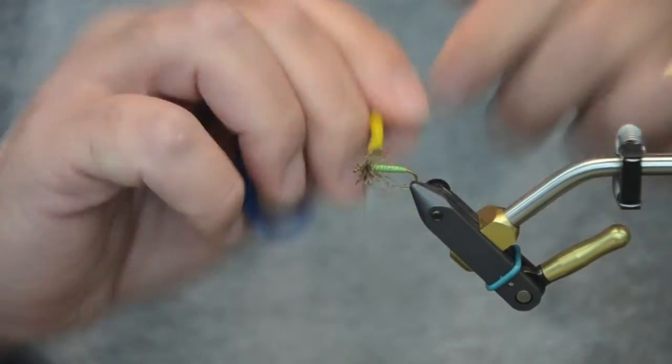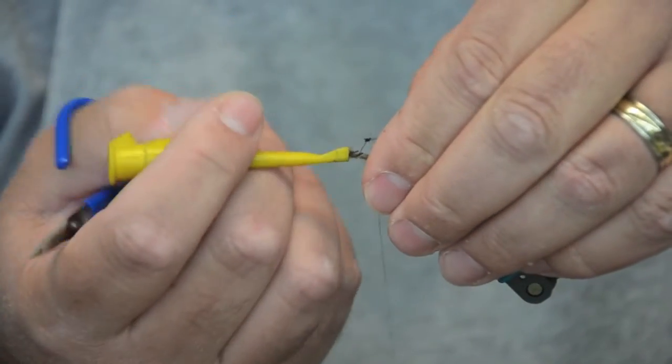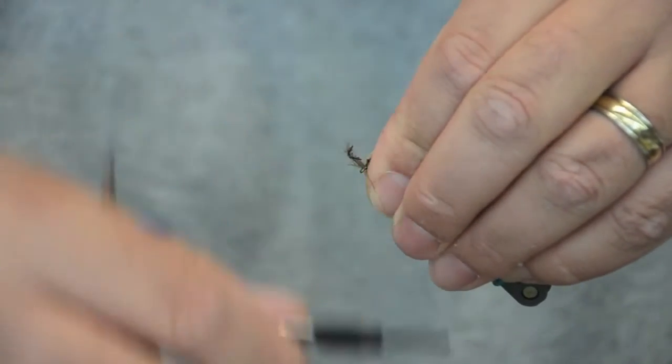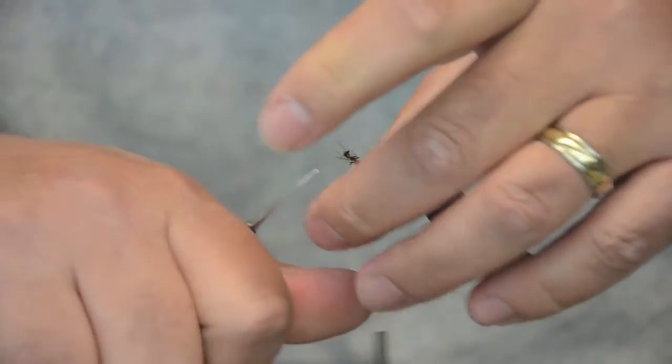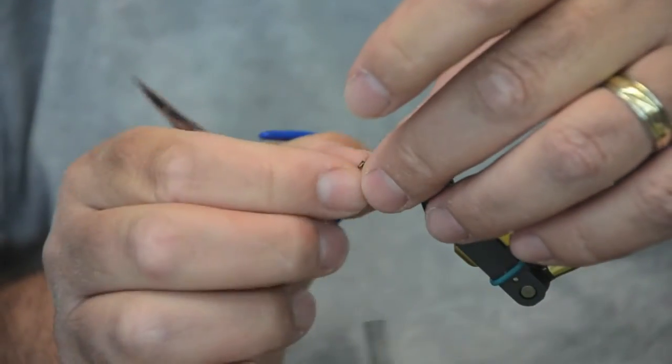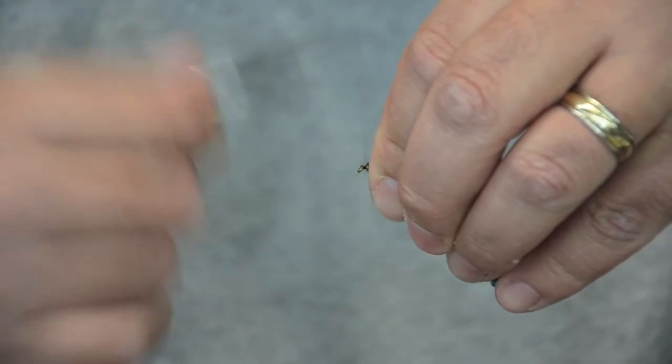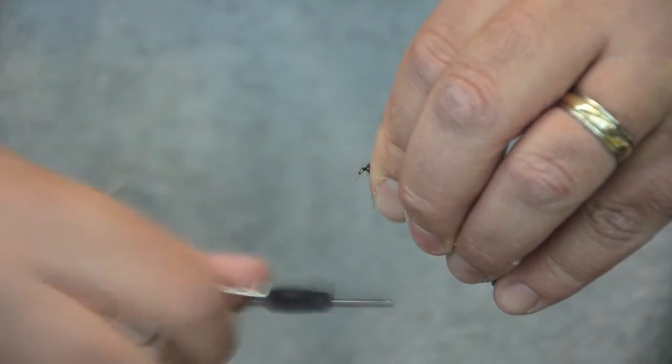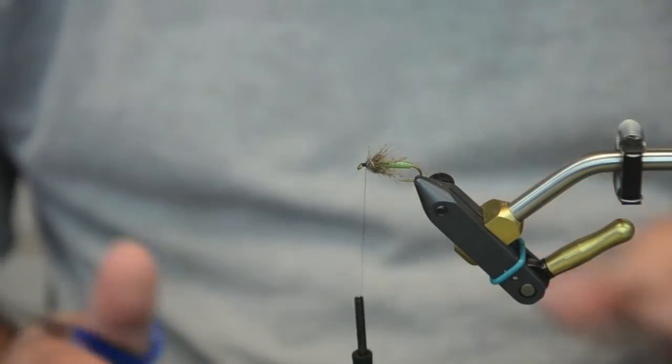I'm just going to wrap this around. Now the CDC will have some fibers that kind of stick out and hang back behind. And initially CDC is going to float real well and be pretty buoyant. But if you take it and just rub it with your fingers in a little water if you want to fish this under the surface, it will lay down. So I've got my thorax there.